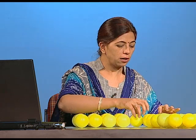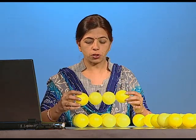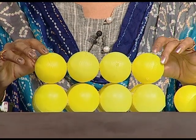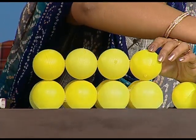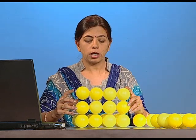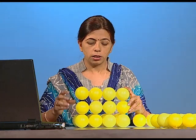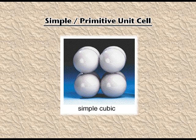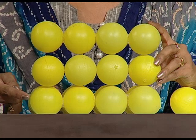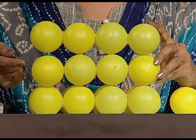To add a third dimension — height — I arrange balls above the existing layer. One option is to place the third layer directly above the first layer. This gives an AAA type packing, and the unit cell generated is a primitive unit cell.